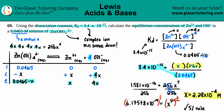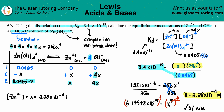Now let's answer the questions. For the equilibrium concentration of Zn²⁺: from the ICE table, that was just x, so [Zn²⁺] equals 2.28×10⁻⁴ M. For the equilibrium concentration of OH⁻: from the ICE table that was 4x, so we plug in 4 times 2.28×10⁻⁴, which gives [OH⁻] equals 9.12×10⁻⁴ M. Those are both of your equilibrium concentrations.